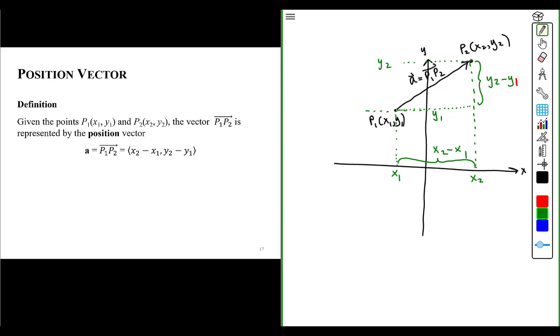So the piece that is parallel to the x-axis, that piece has a length of x2 minus x1. We can call that A1 if you will. We could say that A1 is x2 minus x1. And A2 is a vector, a one-dimensional vector, given by y2 minus y1.